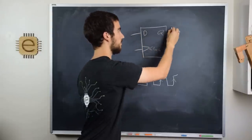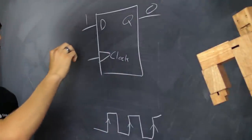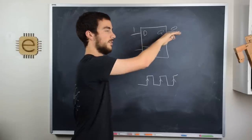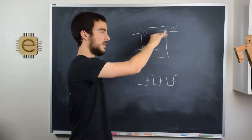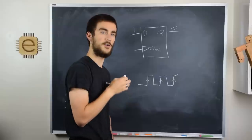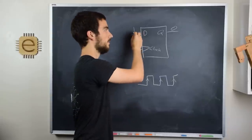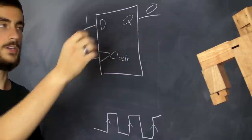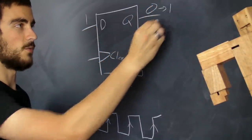So for example, if Q is 0, and D is 1, so we're inputting 1 and the output is 0 right now, Q will stay 0 as long as the clock doesn't change. But the moment the clock goes from low to high, the value of D gets copied to the value of Q, and Q will transition from 0 to 1.